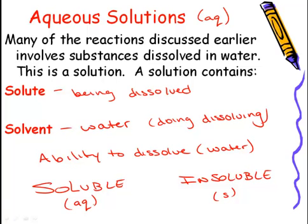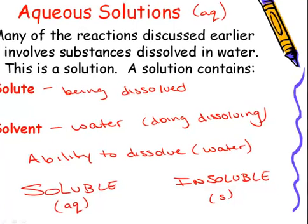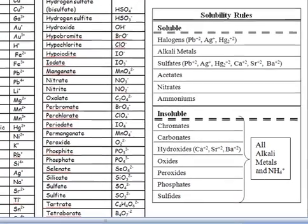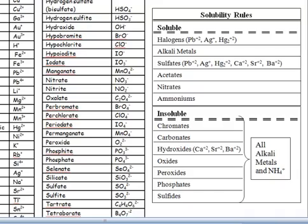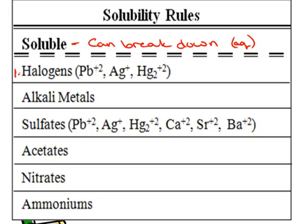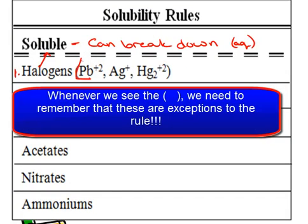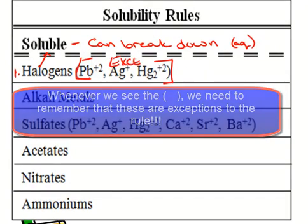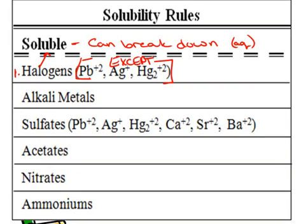To help us with this, we're going to use our periodic table. If we look at our ion chart and slide all the way down, we're going to look at the table that says solubility rules. Our first solubility table talks about substances that are soluble — these can break down and result in aqueous solutions. The first things that are soluble are the halogens, which are in group 7. All halogens are soluble, except if paired with lead 2, silver, or mercury 2. So PbCl2 is insoluble.